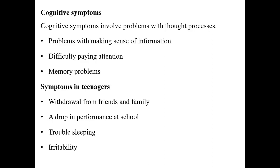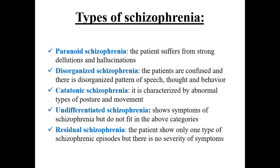Now we will see the types of Schizophrenia. The first one is Paranoid Schizophrenia, which is the most common form of Schizophrenia. It may develop later in life than other types. Symptoms include hallucinations and delusions, but the patient's speech and emotions may not be affected in this type.